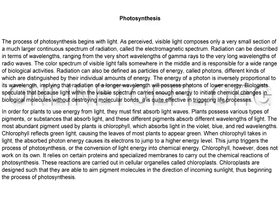The most abundant pigment used by plants is chlorophyll, which absorbs light in the violet, blue, and red wavelengths. Chlorophyll reflects green light, causing the leaves of most plants to appear green.